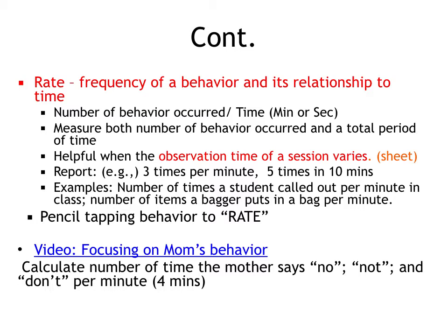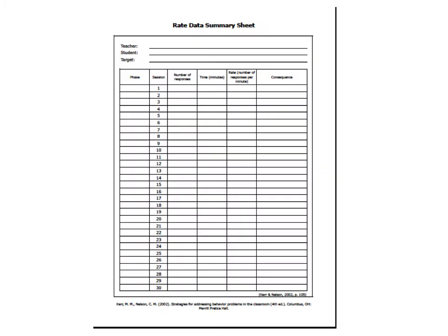Rate is the frequency of a behavior and its relationship to time. You can use rate when the observation time of a session varies. To use frequency, you need the same observation time across sessions. But if your observation time varies — for example, today you can only observe for 30 minutes and tomorrow only 10 minutes — then you can use rate. You count the behavior but divide the number of occurrences by time, reporting it as three times per minute or five times in 10 minutes.